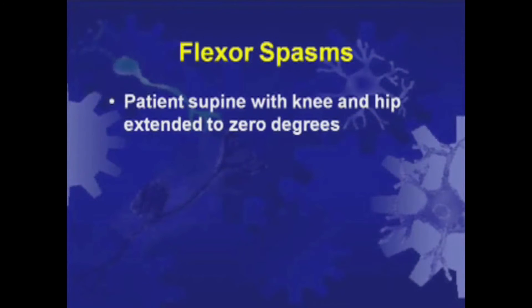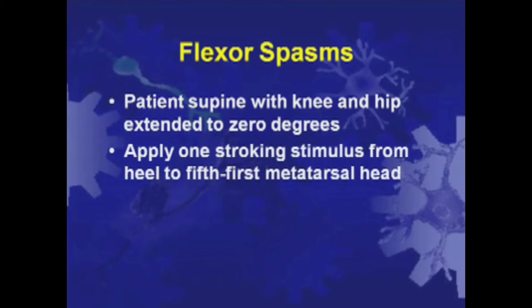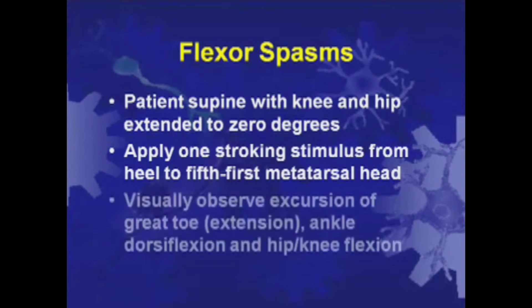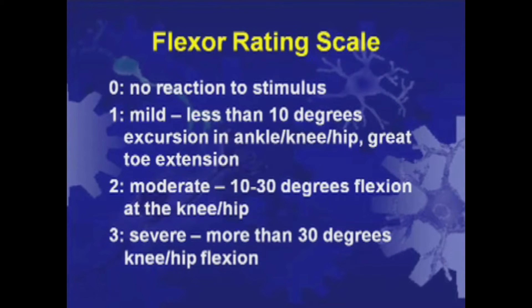Flexor spasms are assessed using a pinprick stimulus. With the knee and hip extended to zero degrees, a pinprick stimulus is applied to the medial arch of the patient's foot. Excursion of the big toe into extension, ankle dorsiflexion, and knee and hip flexion are visually observed for severity. The rating scale consists of a score from zero to three: zero is no reaction; one is a mild reaction with less than 10 degrees of excursion and flexion at the knee and hip, or extension of the great toe; two is a moderate reaction with 10 to 30 degrees of flexion at the knee and hip; and three is a severe reaction with 30 degrees or greater of knee and hip flexion.